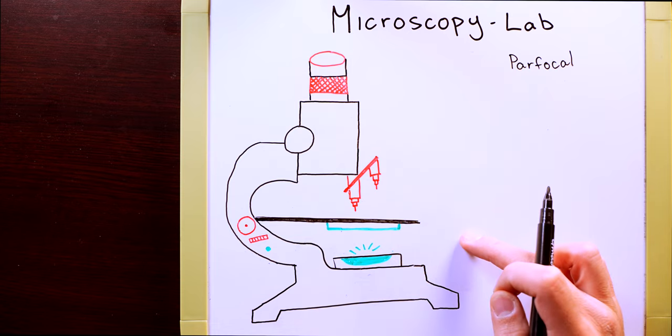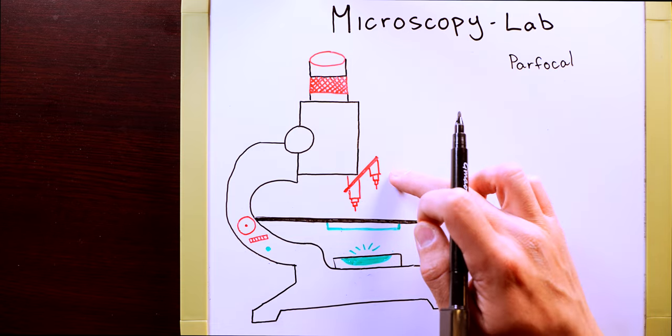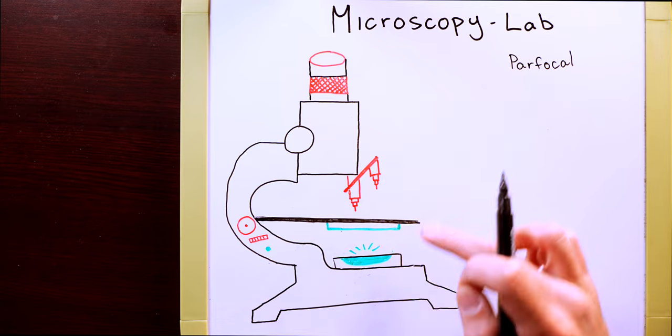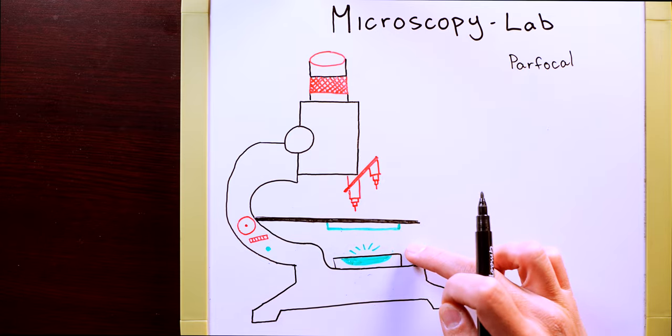Here you can see that our microscope is color-coordinated. The objects in red are going to control your magnification, while the objects in green are going to control your light adjustment.